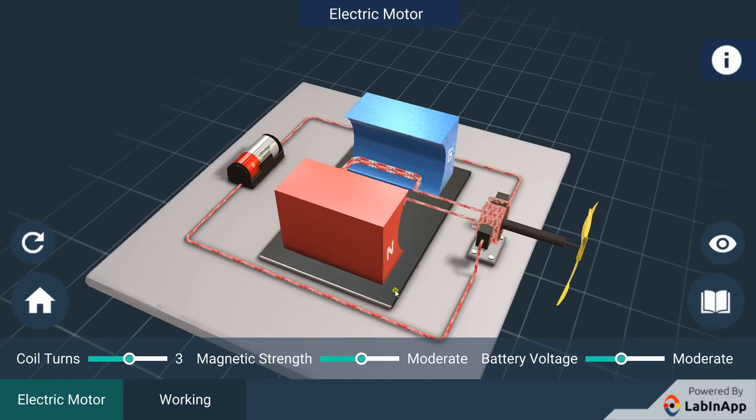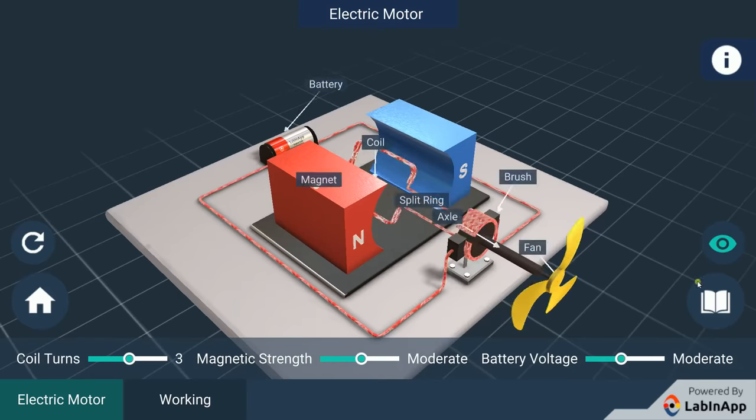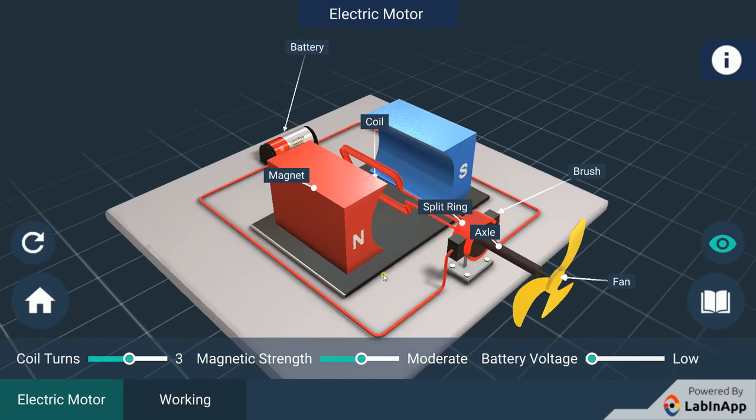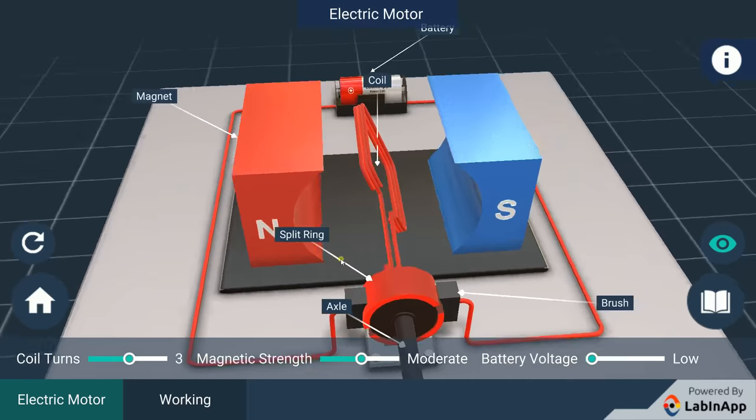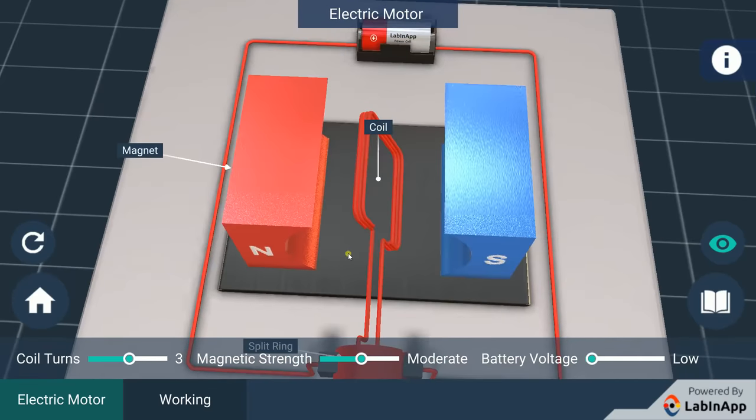An electric motor consists of a rectangular coil of insulated copper wire. The coil is placed between the two poles of a magnetic field.